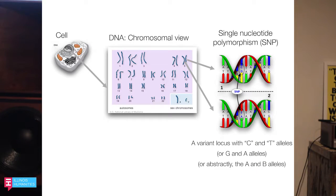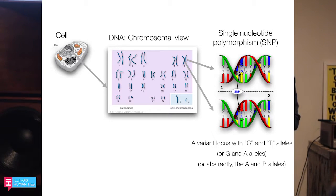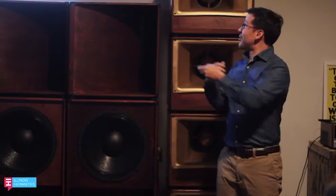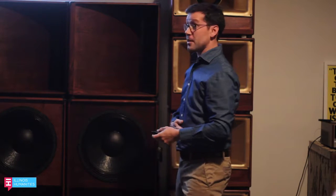We can refer to these as a variant locus with a C and T allele. We can call it a G and A allele if we look at the other strand, or abstractly call them the A and B alleles — or big A and little a as you may have seen in biology class. This algebraic notation for molecular variants is interesting because a lot of the theory of genetics was developed before we even understood that DNA is the molecule that drives it all. Mendel was doing crosses with peas and postulating the existence of these alleles before we even knew that DNA was the stuff of heredity.